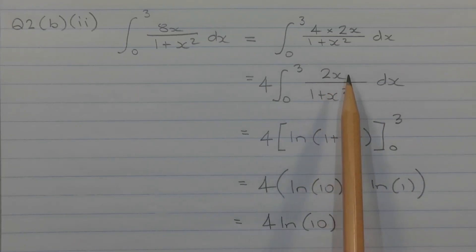Now the integrand is in the form f dash of x over f of x and the integral is ln of 1 plus x squared. So this equals 4 times ln of 1 plus x squared from x equals 0 to x equals 3, and applying the limits of integration that equals 4 outside of ln of 10 minus ln of 1 in brackets, and ln of 1 is equal to 0. So the final answer is 4 times ln of 10.